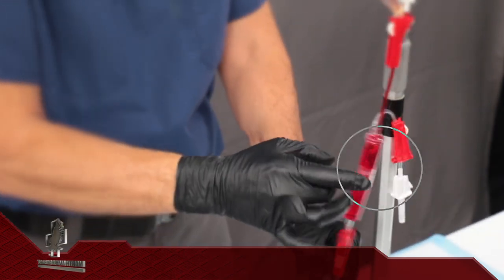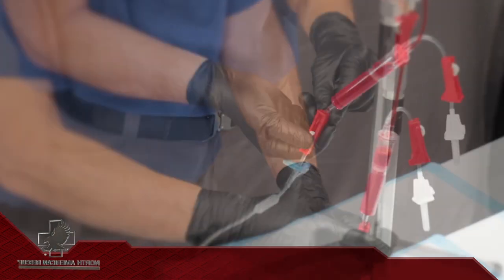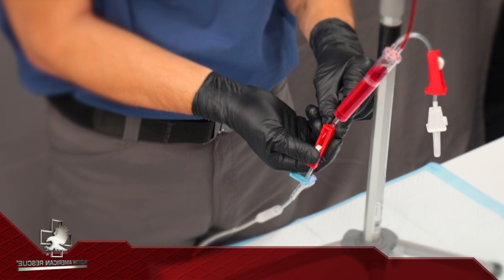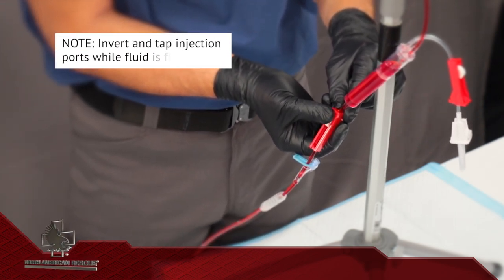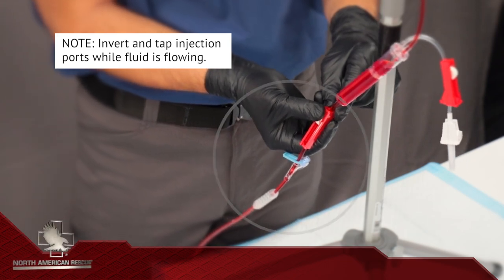Return the drip chamber to its upright position and tap a couple of times to dislodge any air trapped in the filter. Open the downstream clamp. Prime all the way until no visible air is in the tubing. Tap the injection ports when priming to remove trapped air.